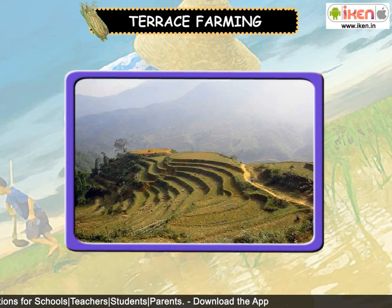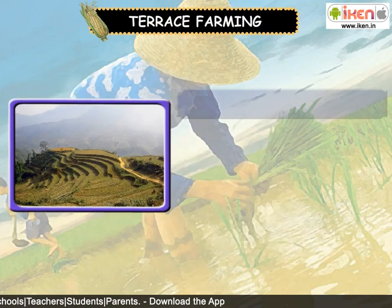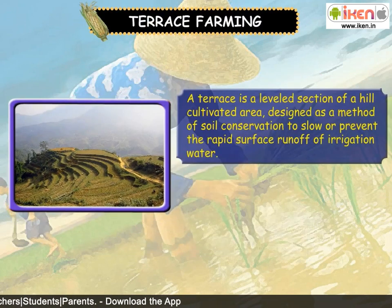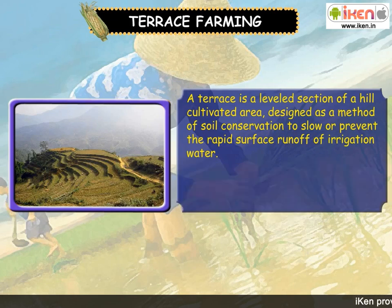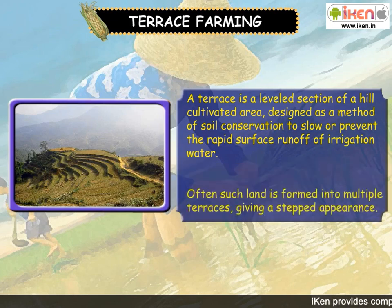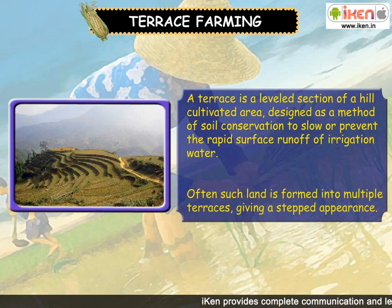Terrace farming: A terrace is a leveled section of a hill cultivated area designed as a method of soil conservation, to slow or prevent the rapid surface runoff of irrigation water. Such land is formed into multiple terraces giving a stepped appearance.